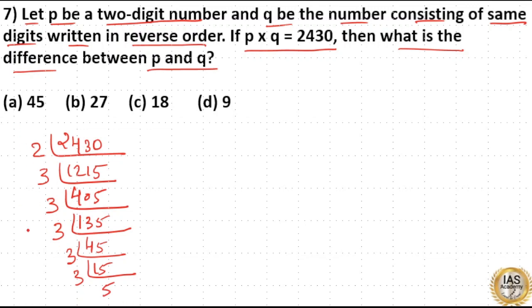Now we have taken the prime factors. 5×3 is 15, 15×3 is 45. 45×3 again is a three-digit number, so take 45—we need a two-digit number.